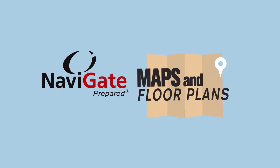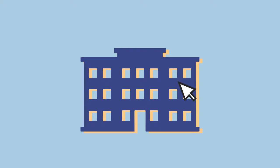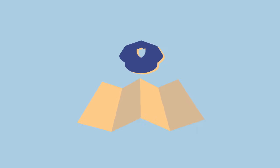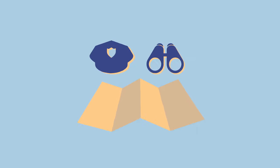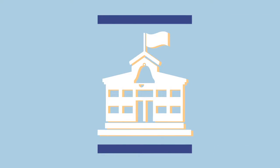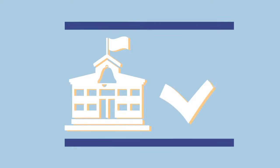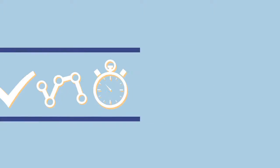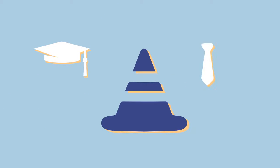Navigate Prepared's Maps and Floor Plans offer you the ability to view locations of key infrastructure or fire and life safety items. Maps and Floor Plans also gives you a first responder's eyes-on view of your school during a crisis, aiding the efficiency, effectiveness and speed of emergency response and improving the safety of students and staff.